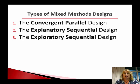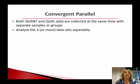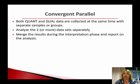Let's first talk about the convergent parallel design. With the convergent parallel design, both your quantitative and your qualitative data are collected at the same time with separate samples or groups. So you'd analyze two or more data sets separately, merge the results during the interpretation phase, and report on the analysis.